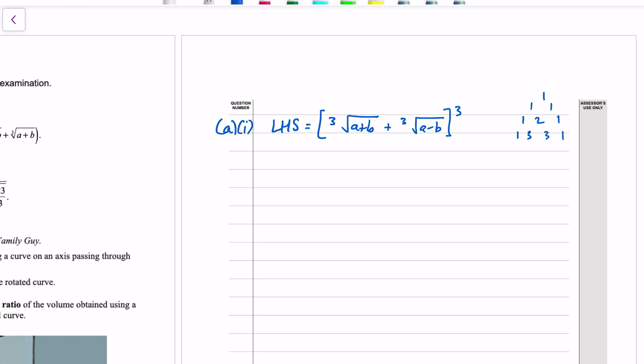So the binomial coefficients are 1, 3, 3 and 1, meaning that we get this first term here, cubed. And then the second thing, cubed, at the other end. So cube root of a plus b, all cubed, is just a plus b. And then at the other end, we get a minus b.